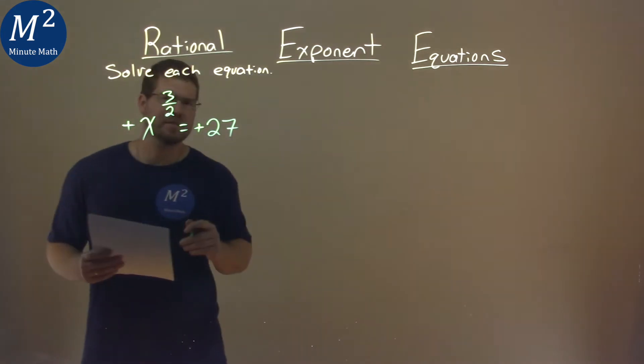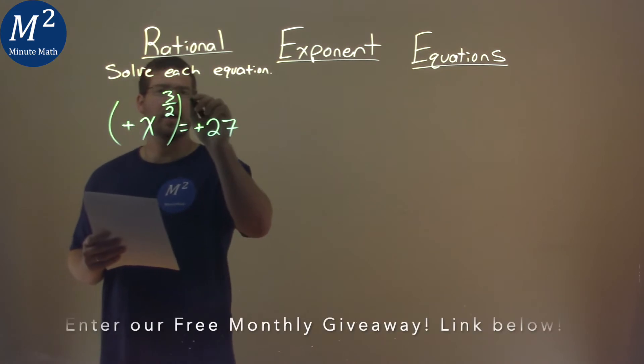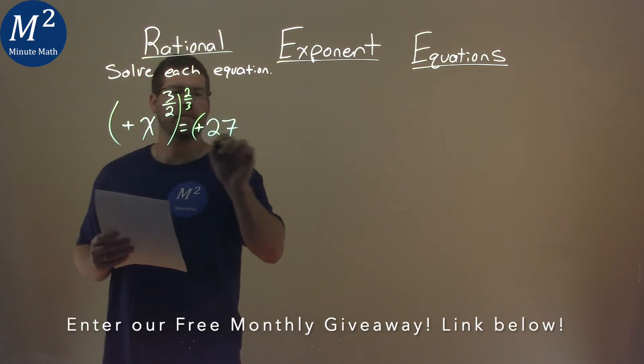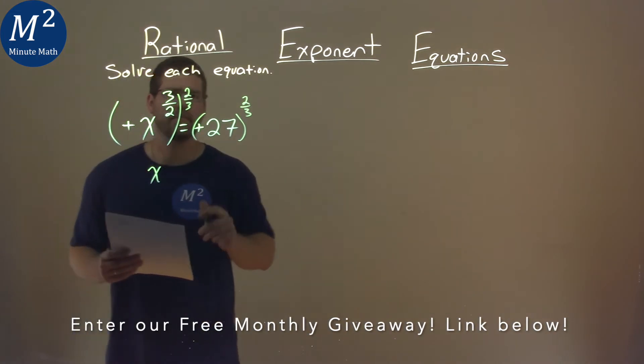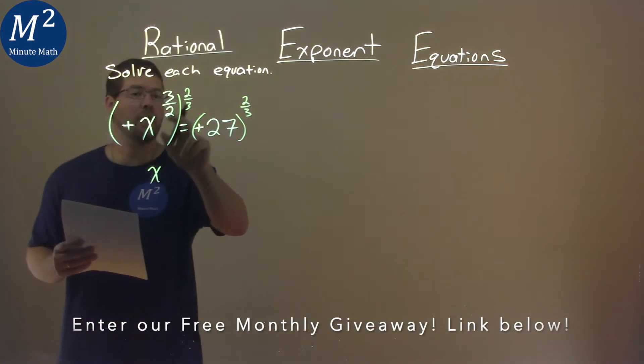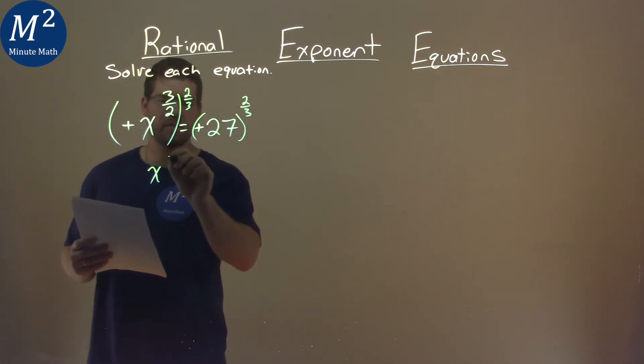Now I'm going to get rid of this 3 halves power. To do that, I'm going to raise both sides to the 2 thirds power. What does that do? X is now by itself. A 3 halves power raised to the 2 thirds power, we multiply them, and 3 halves times 2 thirds is a 1.